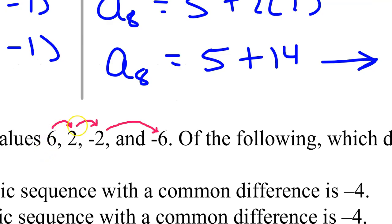Let's see if there is a common difference, so we can tell if the sequence is arithmetic. From 6 to 2, that's a difference of negative 4. From 2 to negative 2, that's again a difference of negative 4. And then, from negative 2 to negative 6 is a difference of negative 4.